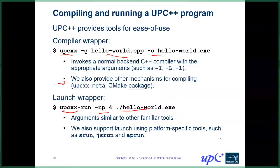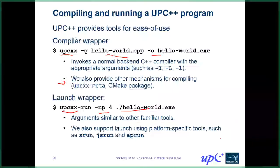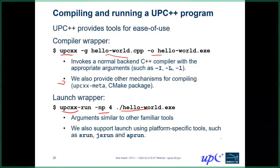On what upcxx-meta is: it's a tool for extracting the arguments that need to be passed to the C++ compiler for compiling a UPC++ program. Whereas upcxx invokes the compiler directly, upcxx-meta gives back the arguments you should use to invoke the compiler yourself. Several of the examples in the slides are available through the shared link, and you can download and try them out.